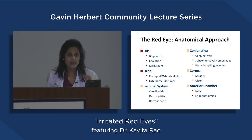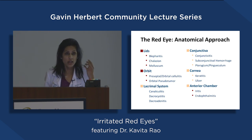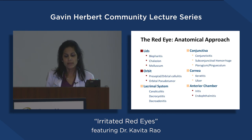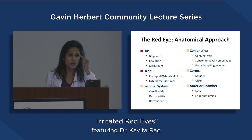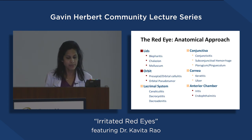The conjunctiva is the white clear covering of the eyelid — that's where you get conjunctivitis from viral or bacterial causes, and the subconjunctival hemorrhage where a blood vessel bursts and the white part looks red. Pterygium — you might have seen this — it's a little growth near the colored part of the eye. It usually happens after sun exposure, like in farmers or gardeners. It's a benign growth, but it often gets inflamed and causes the eye to look red.